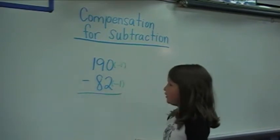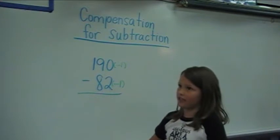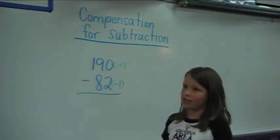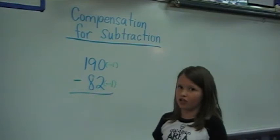Because zero minus two is hard, it's going to land us on a negative number, and not that we can't do it, it's just hard.